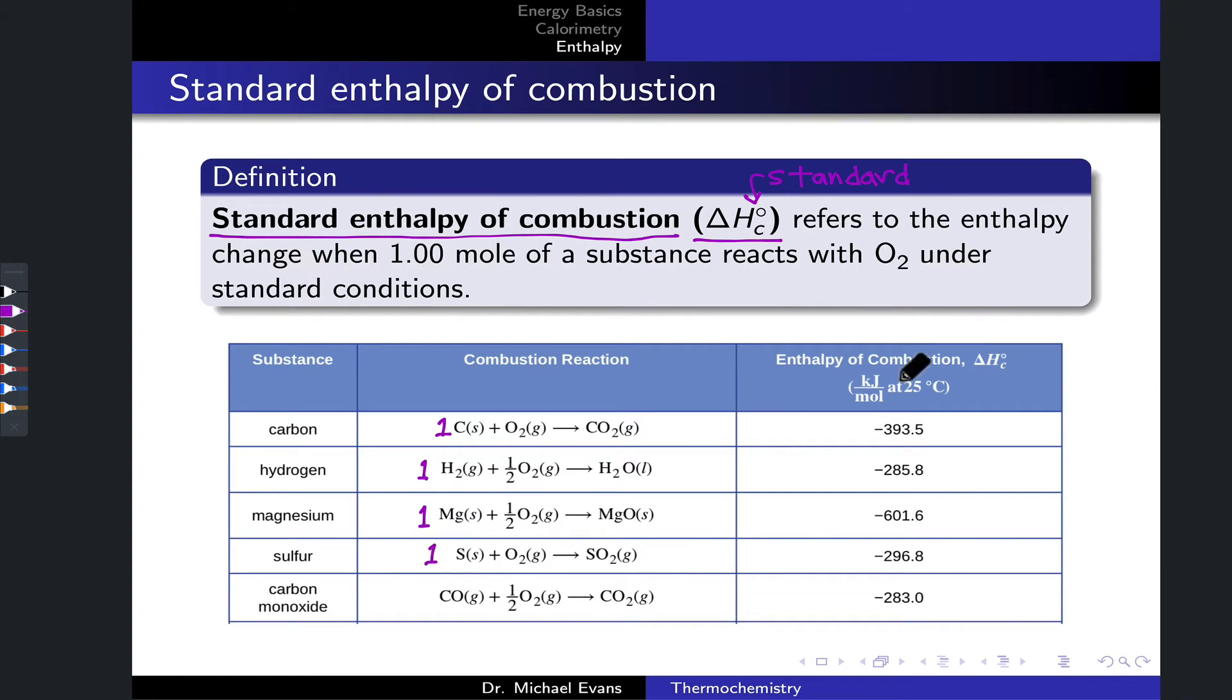In all cases, these enthalpies of combustion are negative, meaning the enthalpy of the products is lower than the enthalpy of the reactants or the reaction is exothermic. This intuitively makes sense for combustion. The units here are kilojoules per mole.